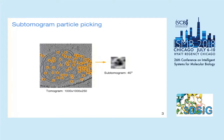After reconstructing the tomogram, particle picking methods such as Difference of Gaussian can be applied to the tomogram to extract a subtomogram. A subtomogram is a small cubic volume that contains one particle, which is purely a macromolecule.